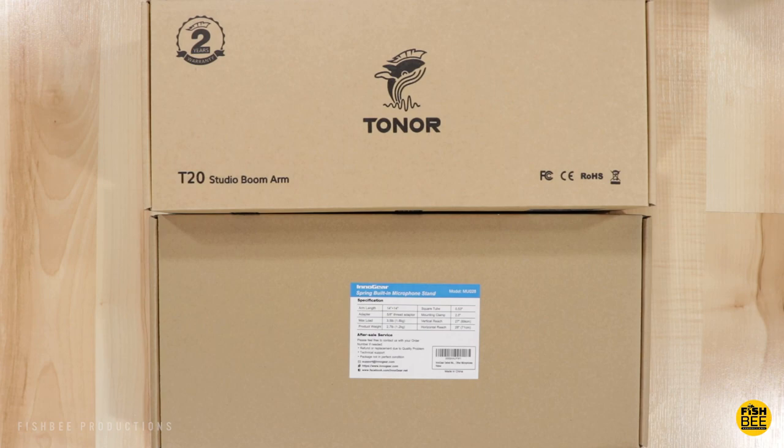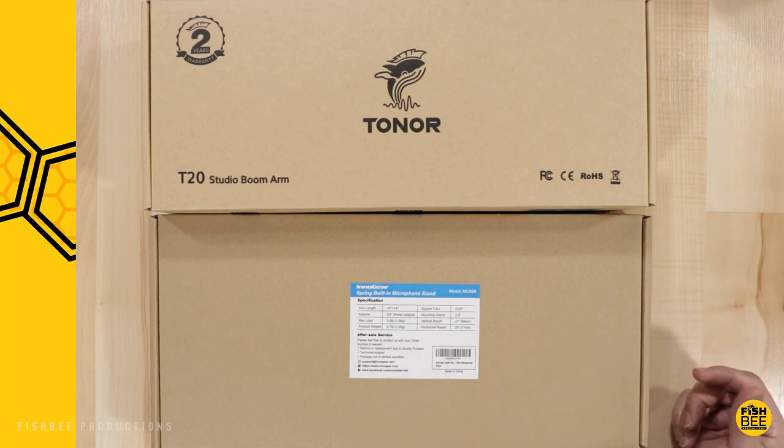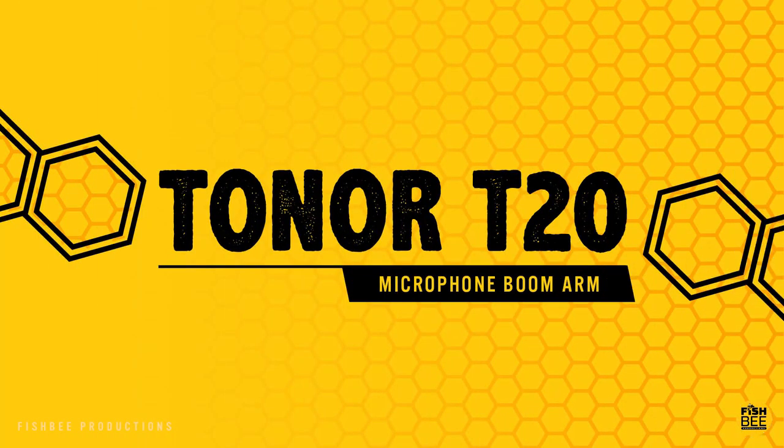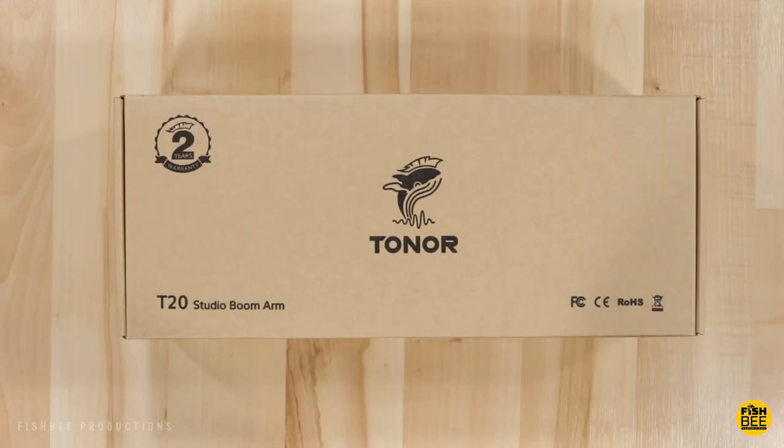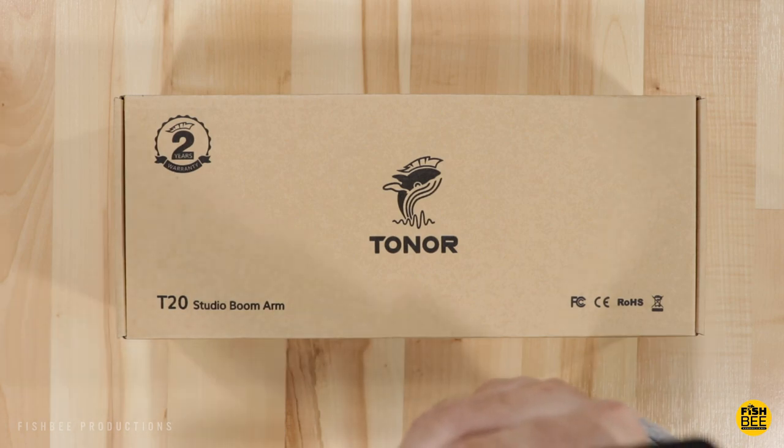The Toner T20 is made of steel material and the maximum adjustable angle of the arm stand is 180 degrees. Now this microphone stand can hold up to 3.5 pounds.